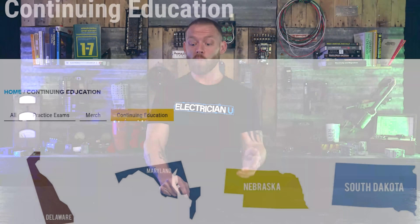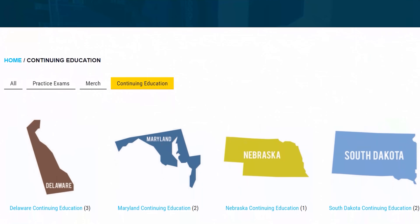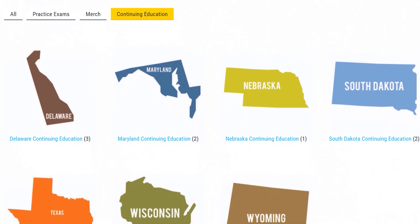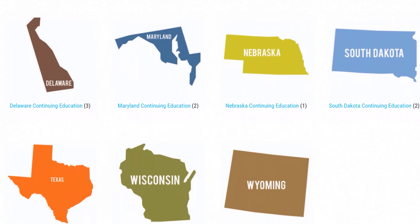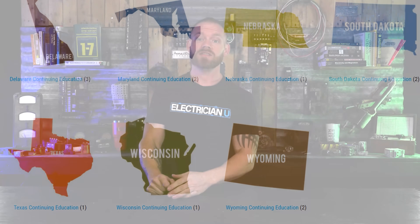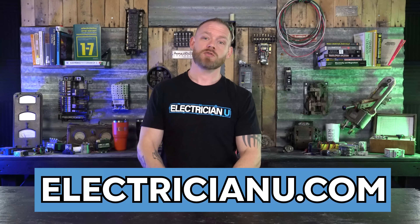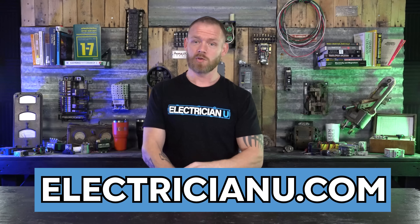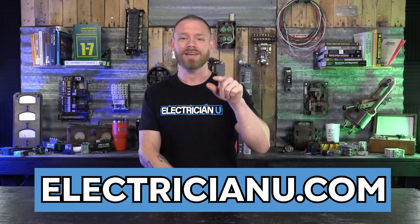We have continuing education available, and we're getting more and more states added throughout the rest of this year. I think we have 10 states now that we're approved in. So if you want some continuing education and you're tired of the same old material, come to Electrician U and check to see if we have your state available. If we don't, keep checking back because we are constantly adding more states.